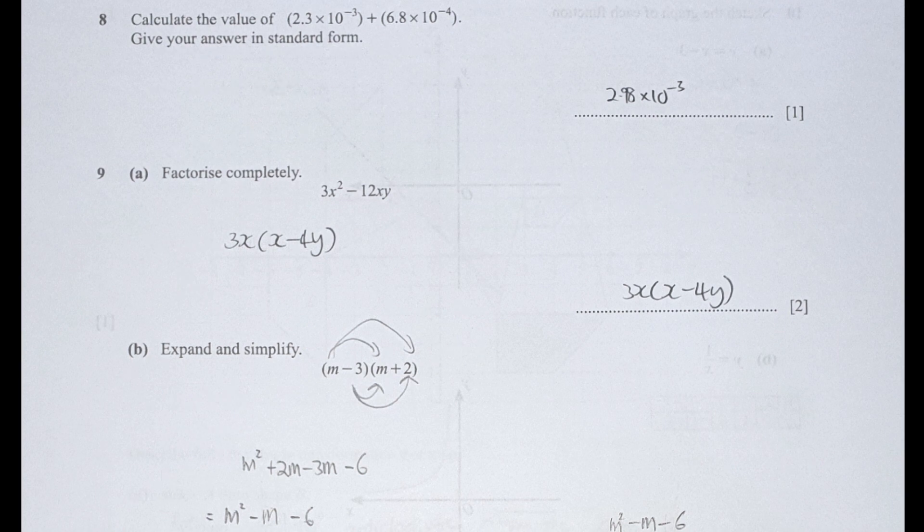Moving on to question 8, I simply key in this entire 2.3 times 10 to the power of negative 3 plus bracket 6.8 times 10 to the power of negative 4 into my calculator and get 2.98 times 10 to the power of negative 3.